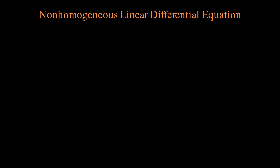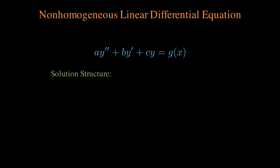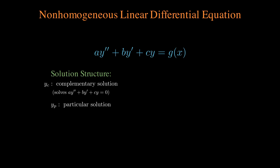Now let's say we don't have a 0 on the right-hand side — we have something non-homogeneous. If we have the homogeneous solution, which is some linear combination that can equal 0, and we just add a particular solution that solves for the specific g(x) on the right-hand side, that combination will also be a valid solution.